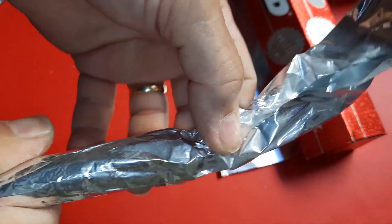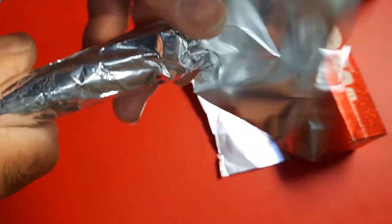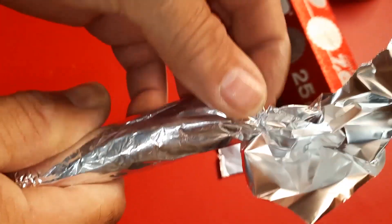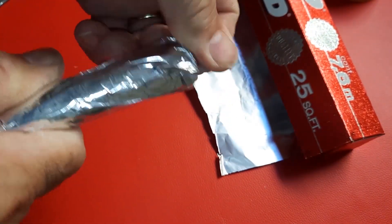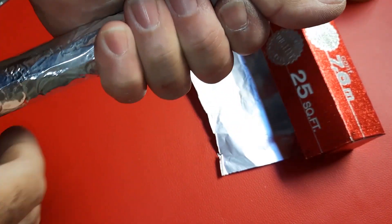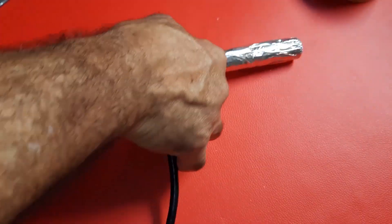7. Finally, use adhesive tape and wrap it around the body of the aluminum foil. Repeat this process on the other side. Attach a connector to the coaxial cable to perform the antenna test.